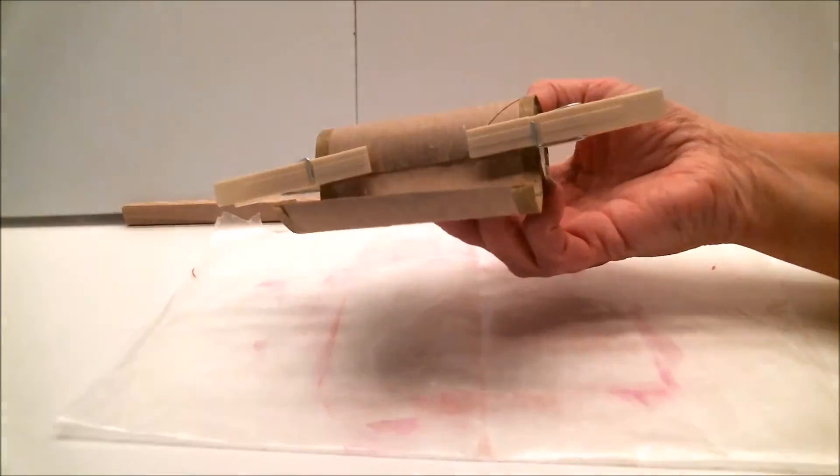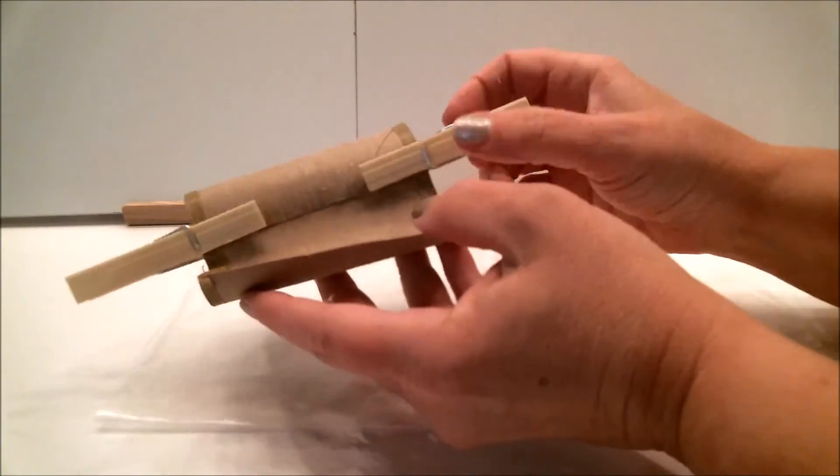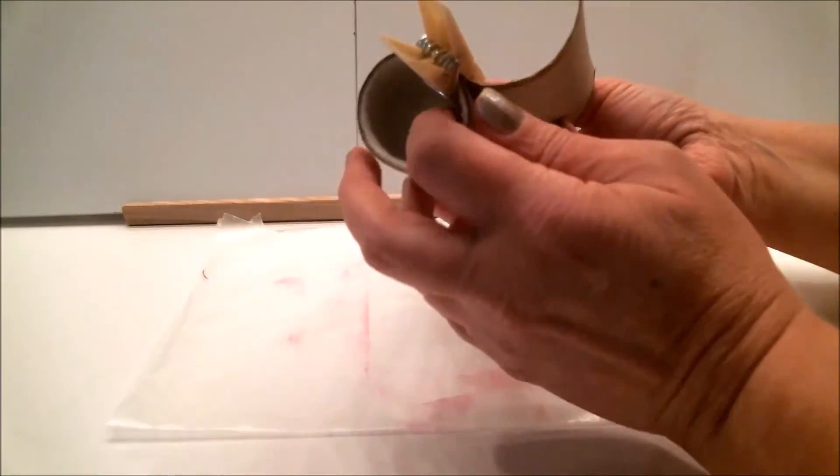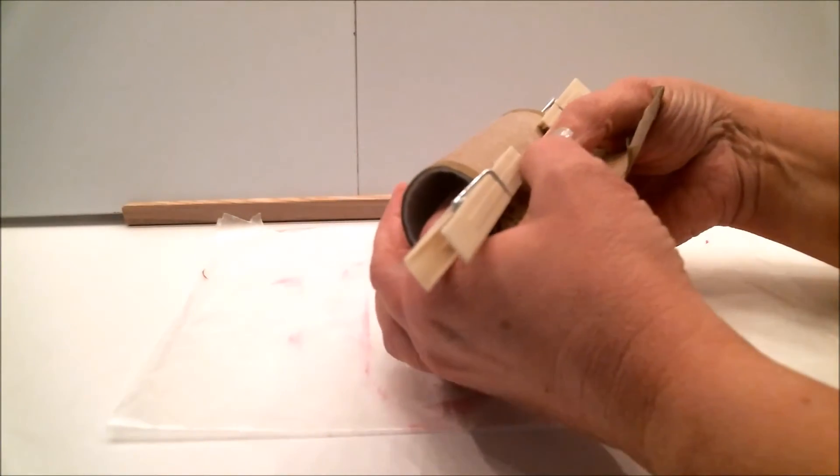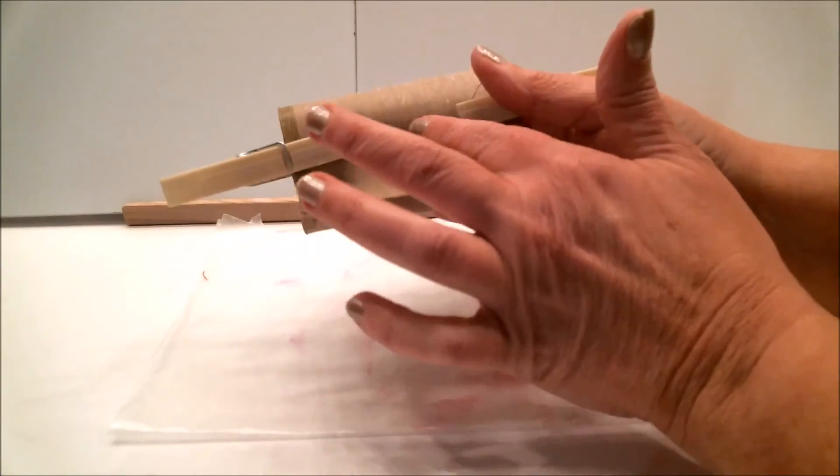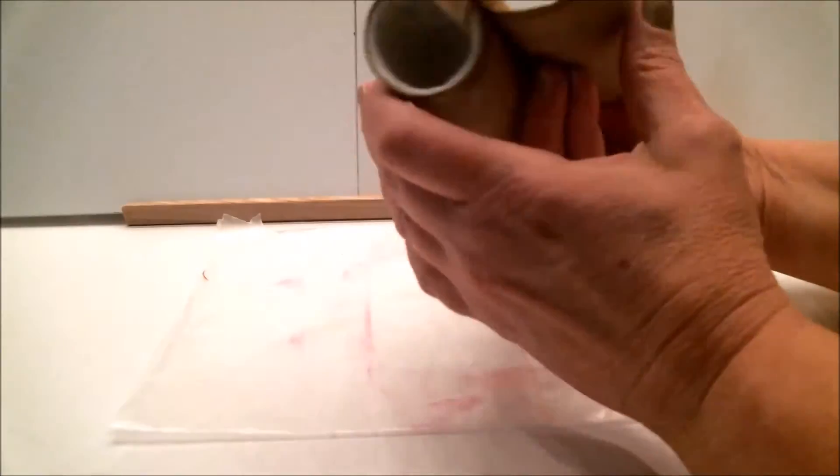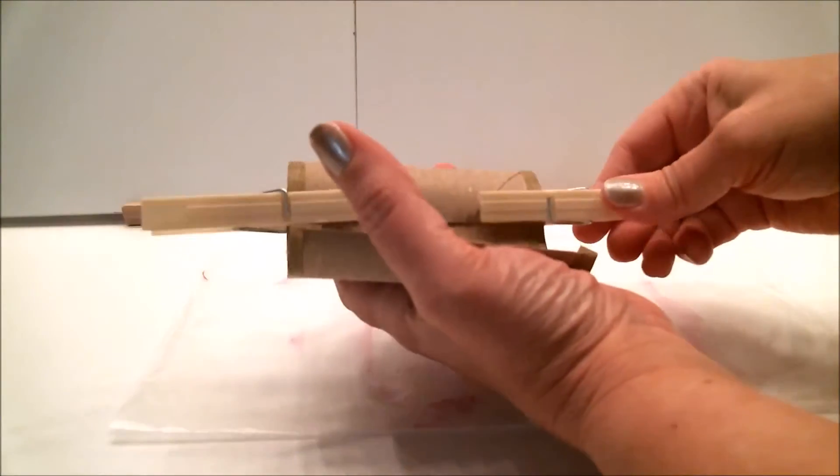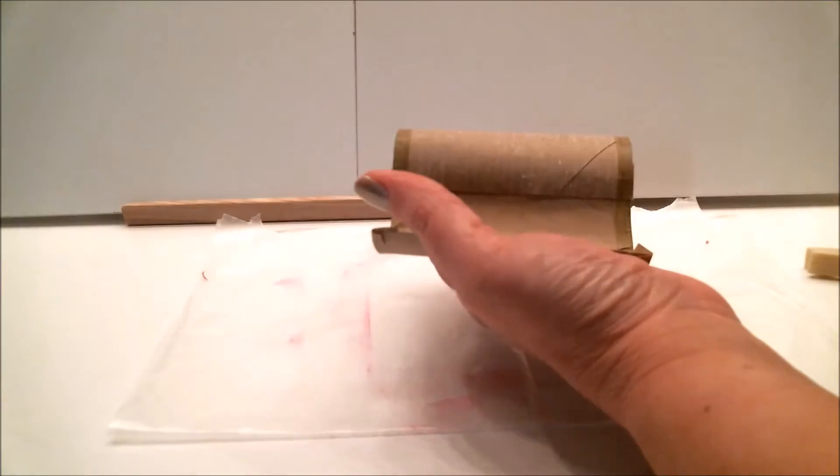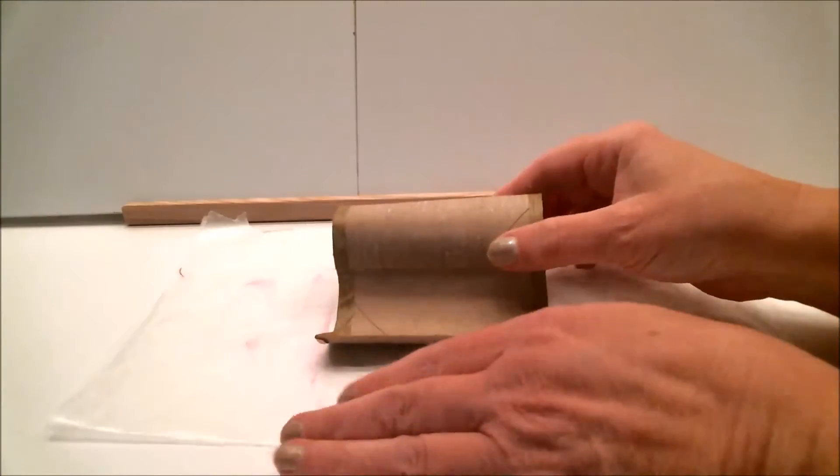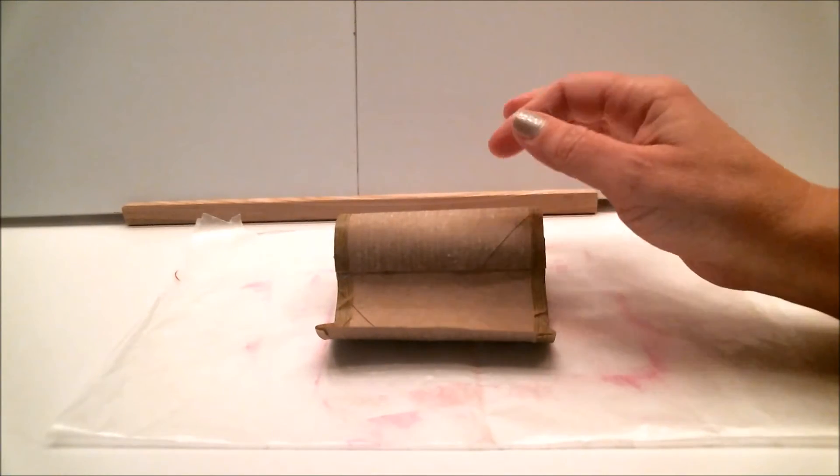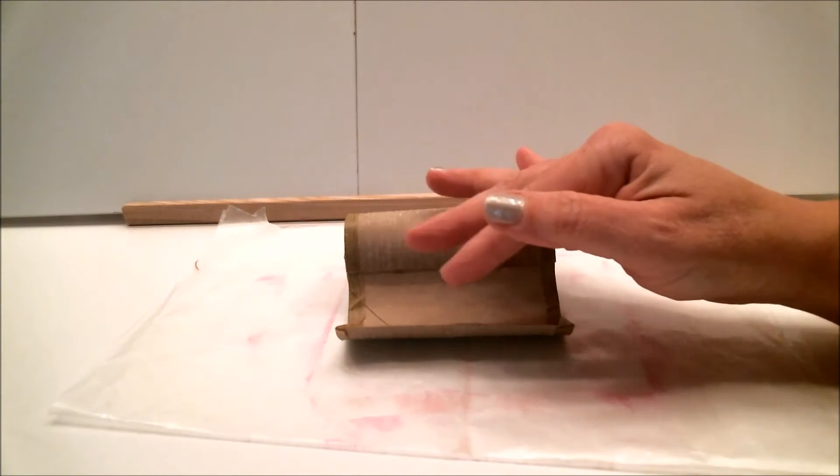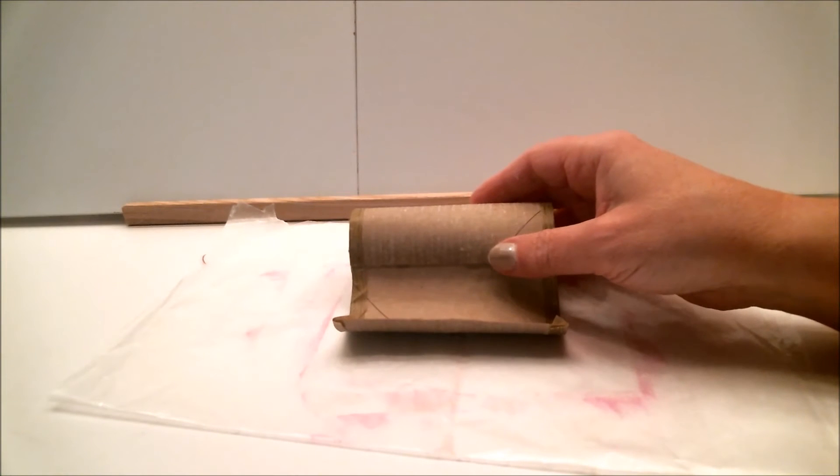Before I move on, I wanted to show you how I use the clothespins. I just put them on the ends to help hold it together. And then of course I stick my fingers inside and make sure that it's adhered really well. That's really important. And now that it is, I'm going to be taking the clothespins off. And the next step is where you would be adhering your paper or the faux leather or whatever you're going to be putting over the outside.